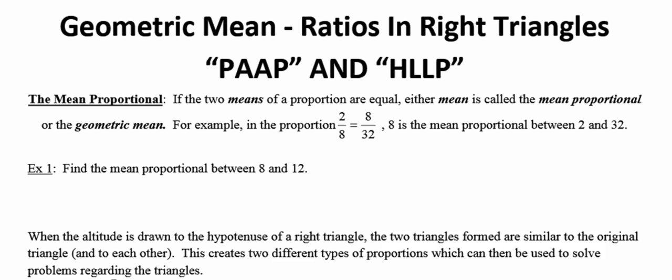Today's lesson deals with some ratios that are formed when the altitude is drawn to the hypotenuse in a right triangle. We're going to start out by talking about mean proportional, first of all, because it's important that you understand that terminology and vocabulary before we can move forward with those proportions.